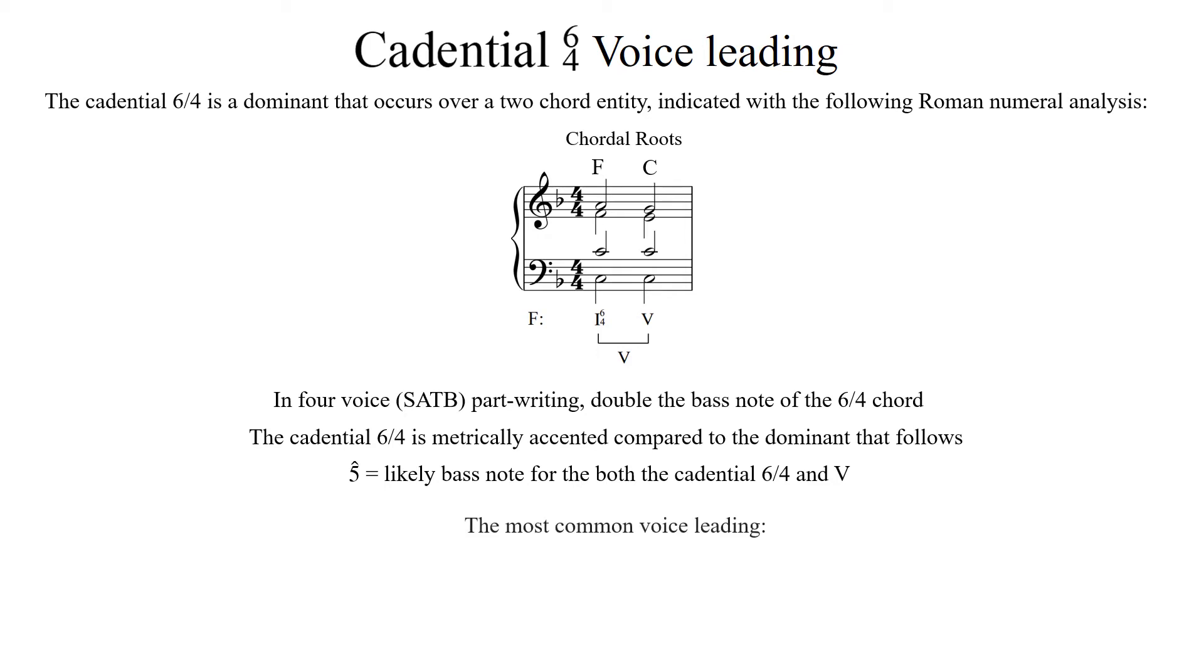Now turn your attention to the voice leading, specifically how the voices move from 1-6-4 to the 5, as it illustrates the most common motion from the 6-4 position to the root position 5. The 6th above the bass, the A, moves down by step to a 5th above the bass, to G, while the 4th above the bass, the F, moves down by step to a 3rd above the bass, to the E.